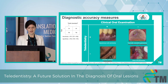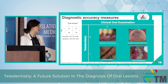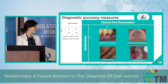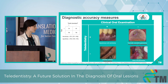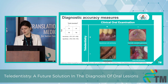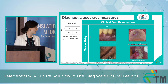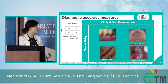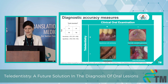We can see that, for example, carcinoma is well diagnosed by teledentistry tools and with oral examination. However, for example, chelitis actinica, which is a premalignant lesion, was mistaken for hemangioma in the case of teledentistry. So we would like to know how many cases are misdiagnosed — the false negatives and also the false positives.